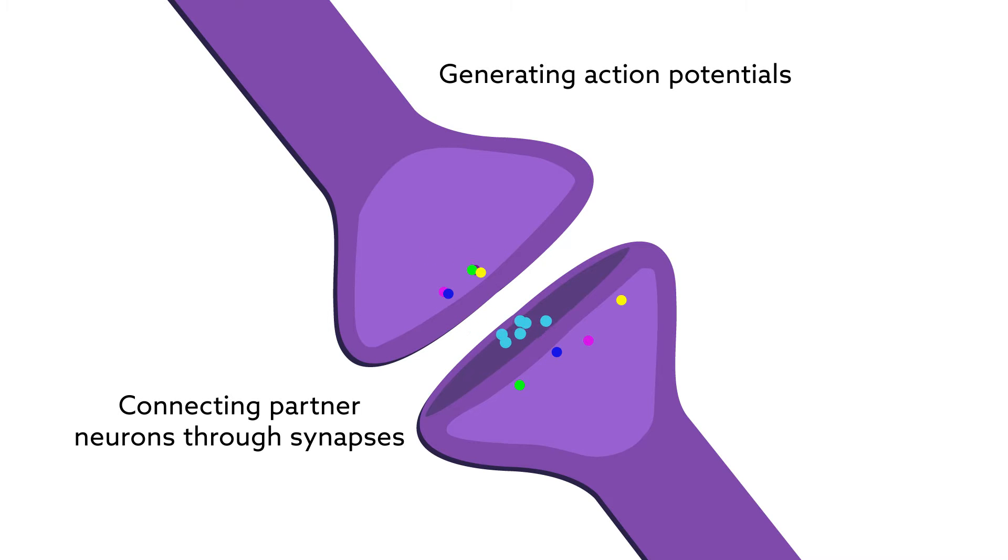Inside cells, proteins carry out the processes that make life possible. In nerve cells, proteins help the brain process information and store memories by generating action potentials, connecting partner neurons through synapses, and regulating synaptic transmission.